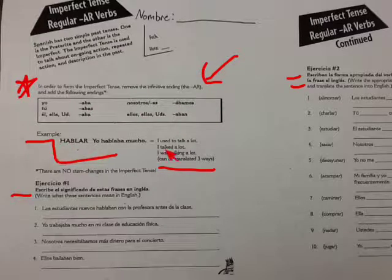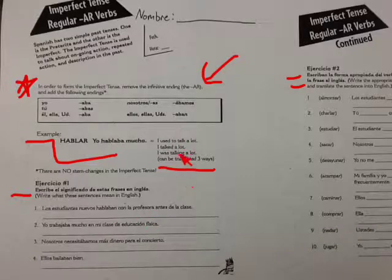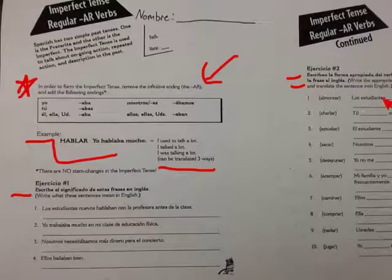Here's an example right here — no stem changing verbs — and there are two different exercises. On this one you translate the sentences, and the significance here is important. On part two, there are two things you're doing: one is conjugating the verb in the imperfect, and then translating the sentence into English again.